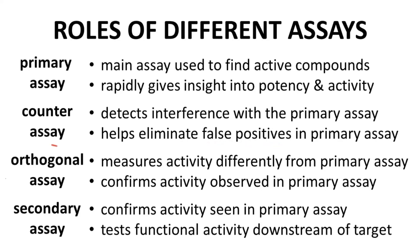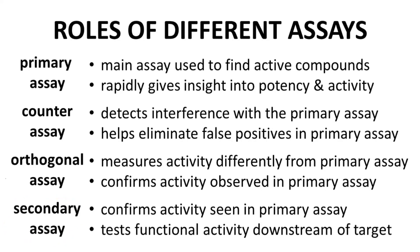An orthogonal assay uses a different method for detecting activity in the primary assay in order to confirm the results of the primary assay. For example, if the primary assay is an enzyme inhibition assay that measures the rate of reaction by UV detection of product formation, an orthogonal assay might detect product formation by mass spectrometry. Finally, a secondary assay is a completely different assay that monitors changes downstream in the biological pathway relative to the primary assay.